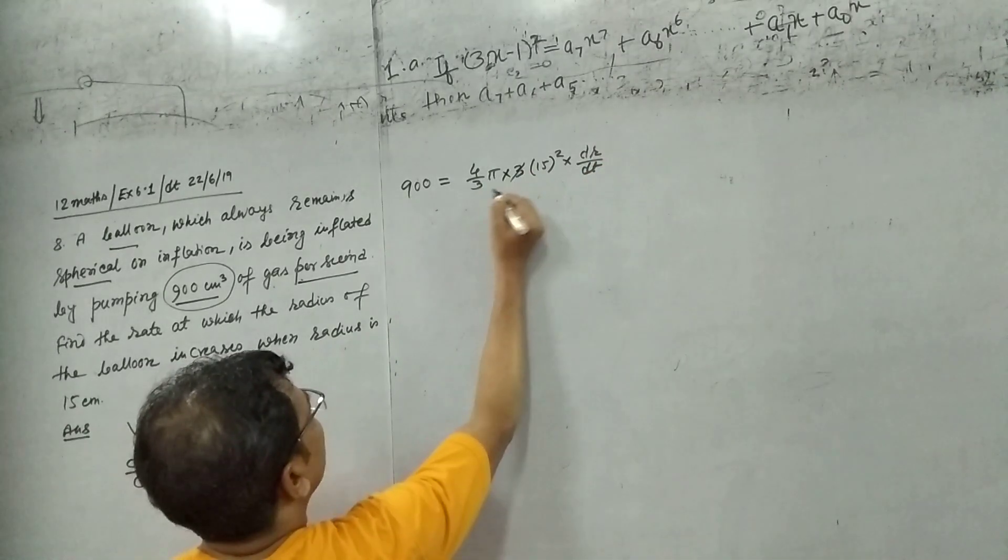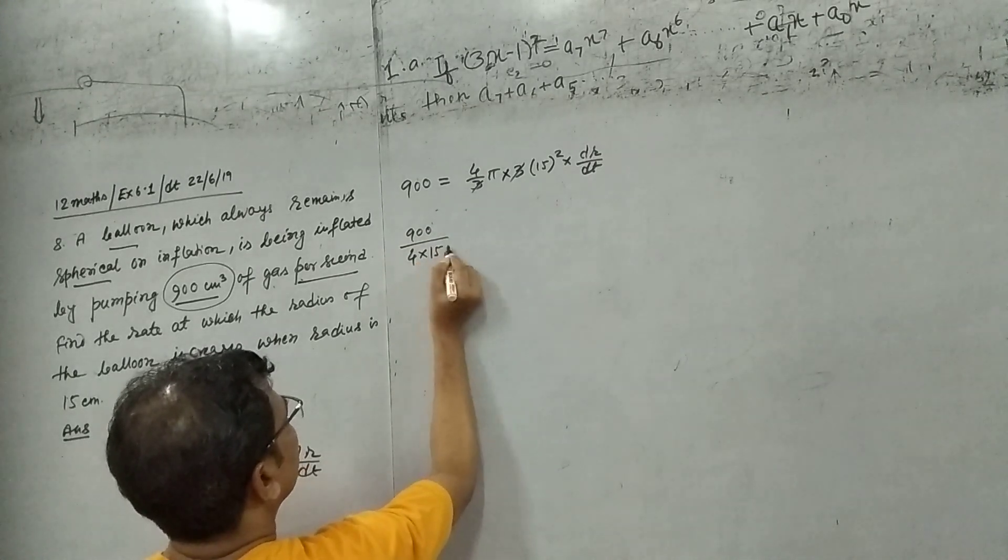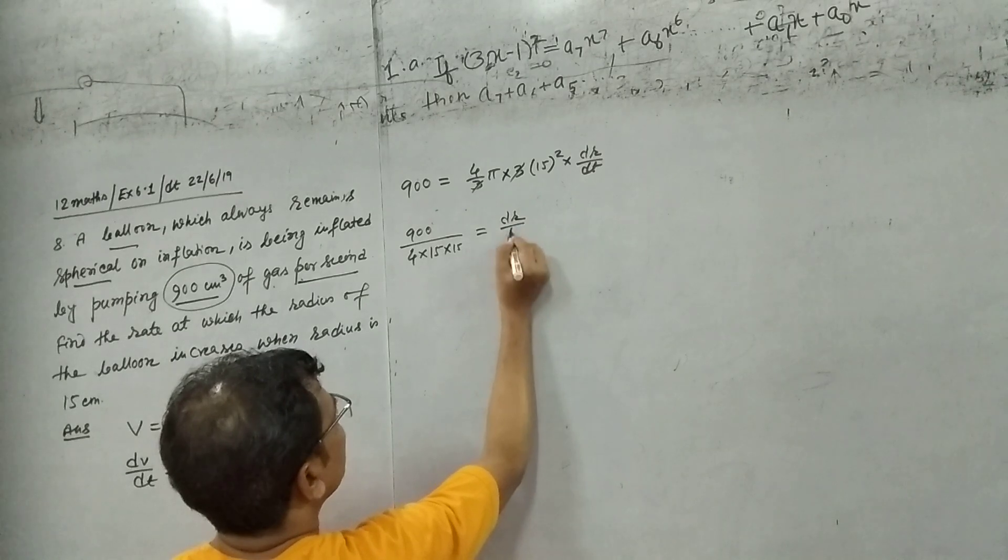So we will cancel again. So 900 upon 4 into 15 into 15 equals to dr upon dt.